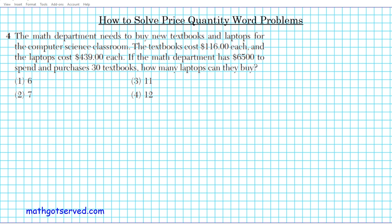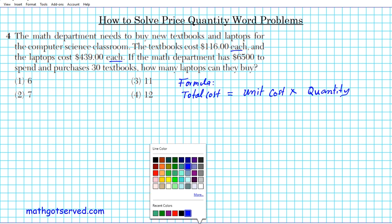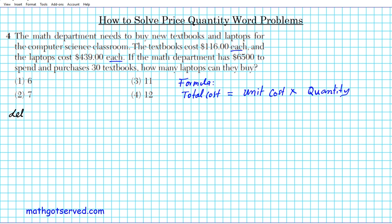So for this one, we're going to start off by writing down our formula. The formula for this problem is a cost equation formula. The total cost is equal to the unit cost multiplied by the quantity. We have two unit costs here: textbooks at $116 each and laptops at $439 each. Let's go ahead and declare our variables. We'll start with assigning a variable to the quantity of textbooks.